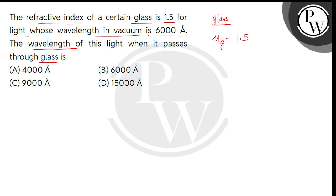Here the light's wavelength in vacuum is given. It means we'll take its value as lambda, this is 6000 angstrom. And we need to find this same light's wavelength in glass, it means lambda G is unknown.